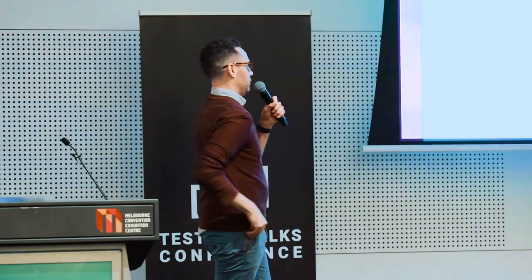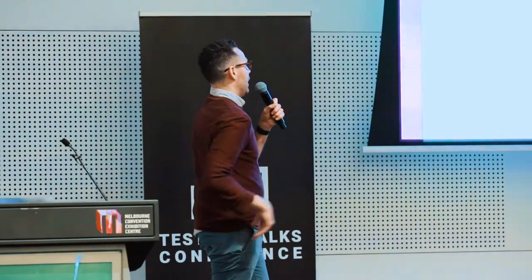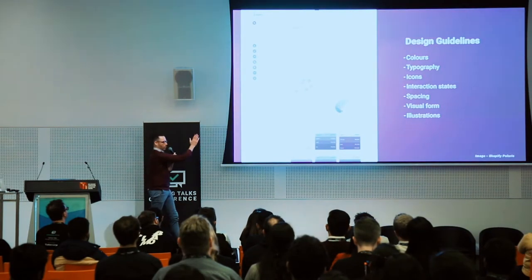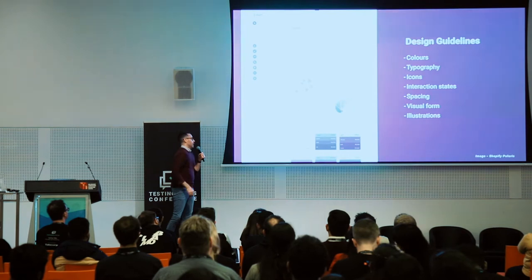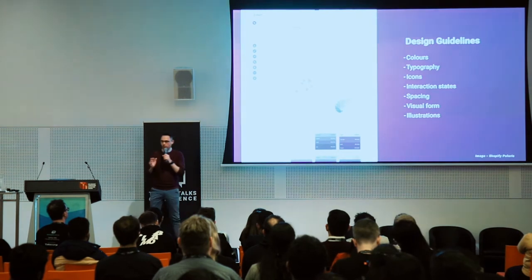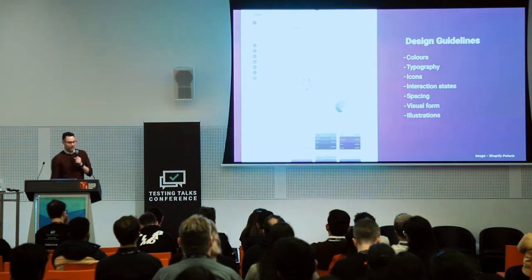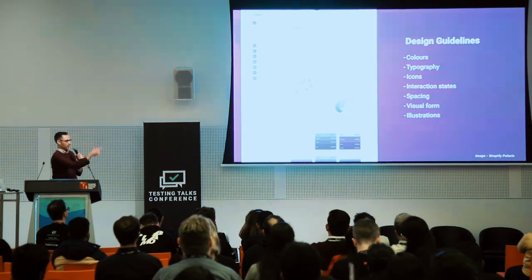This is Shopify's Polaris design system, and you can see how they document colour quite well here — it's all very well documented. They do that not just for colours but typography, icons, all that kind of stuff.